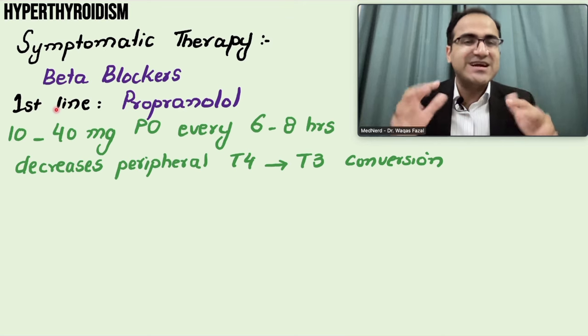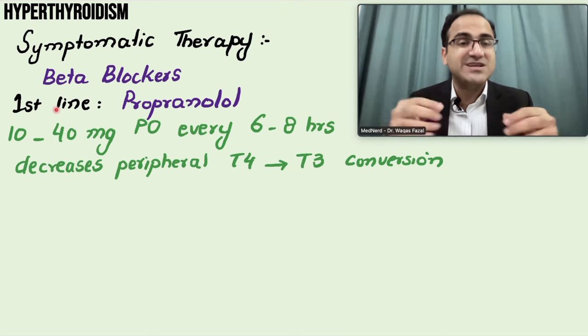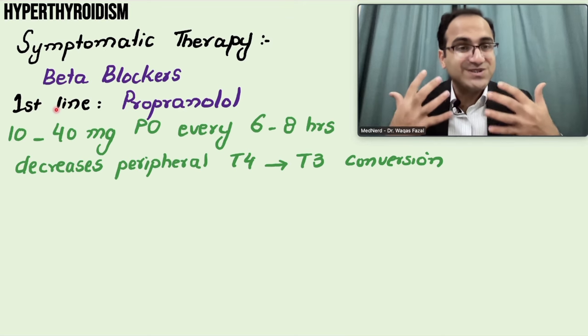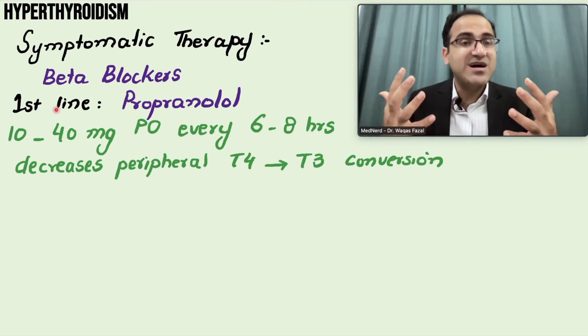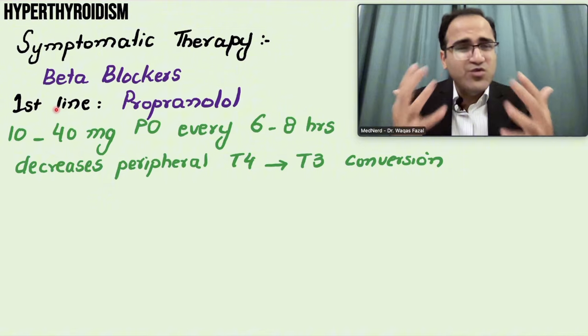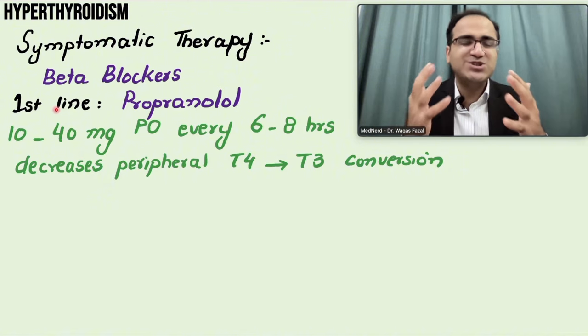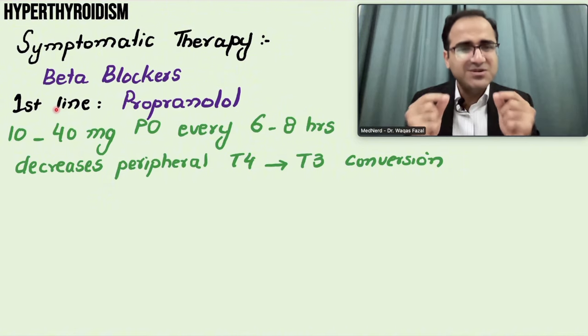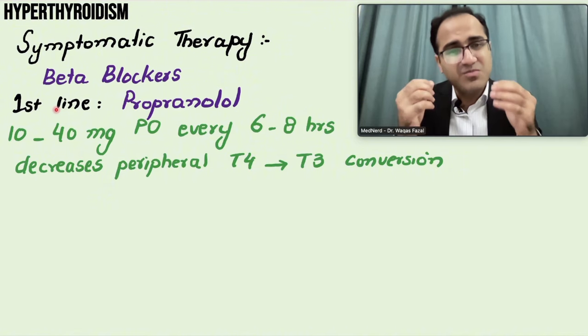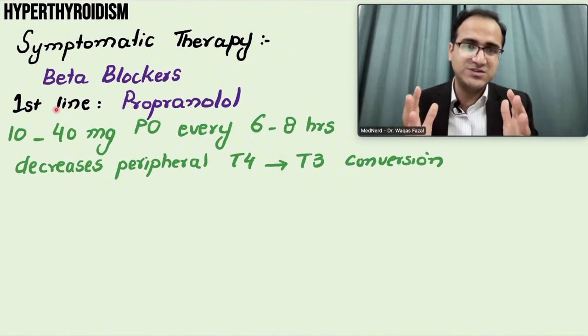Whenever a patient presents with hyperthyroidism - having sweating, tremors, palpitations, tachycardia, diarrhea with weight loss - these patients are very symptomatic, and symptomatic therapy must be given.